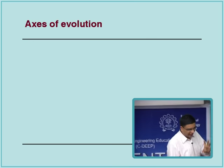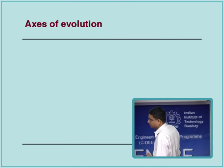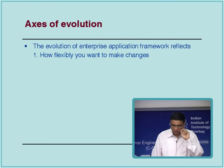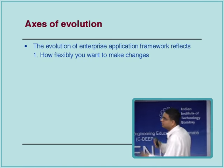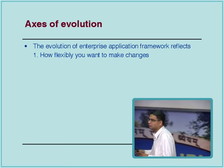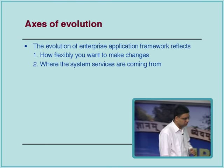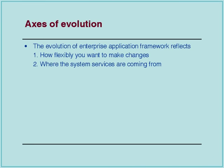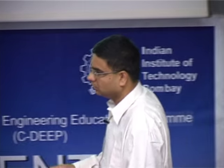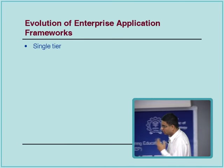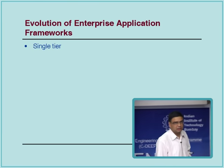There are actually two axes along which evolution has proceeded within software systems. The first axis is how many changes can I make and how easily can I change the software platform — in other words, how flexible is my application platform and how much does it cost to make a change? The second axis is where are these system services coming from — are they embedded, are they explicit, is there infrastructure for them, are they standardized? So there are these two axes of evolution, and the standard avatars we've gone through are: single tier, two tier, n-tier, with remote procedure calls first, then distributed object-based systems, then web-based systems.